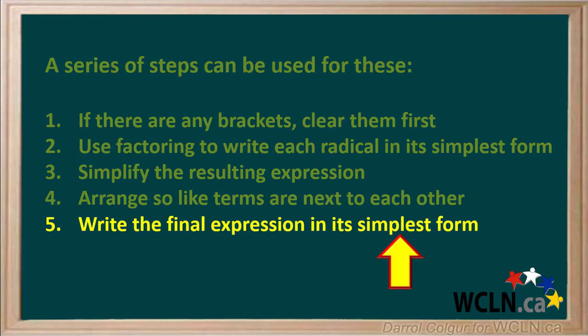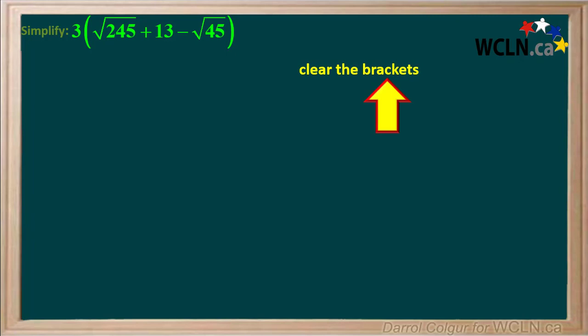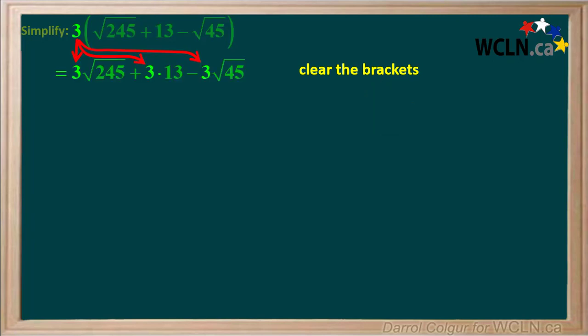We can illustrate these steps using an example. We are asked to simplify this expression, which involves adding and subtracting square root radicals and numbers. The first step is to clear the brackets by using the distributive property. Notice there is a 3 on the outside of the brackets, so we remove the brackets and multiply each term by 3.